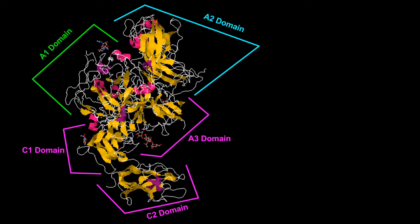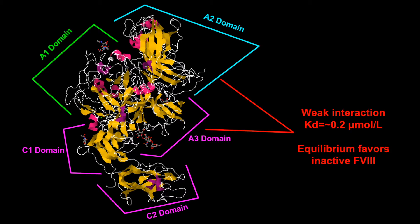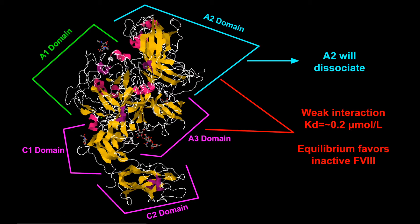The weak interaction between the A2 domain and the metal ion linked A1 to A3C1C2 dimer causes first order dissociation of its free A2 subunit. The instability of active Factor VIII is due to the dissociation constant for this interaction, which is about 0.2 micromolars per liter. This value is about 100 to 1000 fold greater than the Factor VIII concentration in plasma, and so equilibrium favors the inactive, dissociated state of Factor VIII.